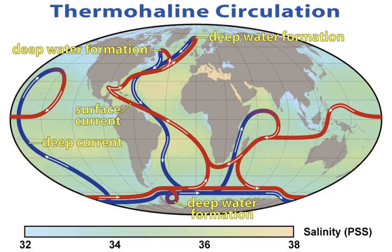Note that, unlike fresh water, seawater does not have a density maximum at 4 degrees Celsius, but gets denser as it cools all the way to its freezing point of approximately minus 1.8 degrees Celsius. This freezing point is, however, a function of salinity and pressure, and thus minus 1.8 degrees Celsius is not a general freezing temperature for seawater.